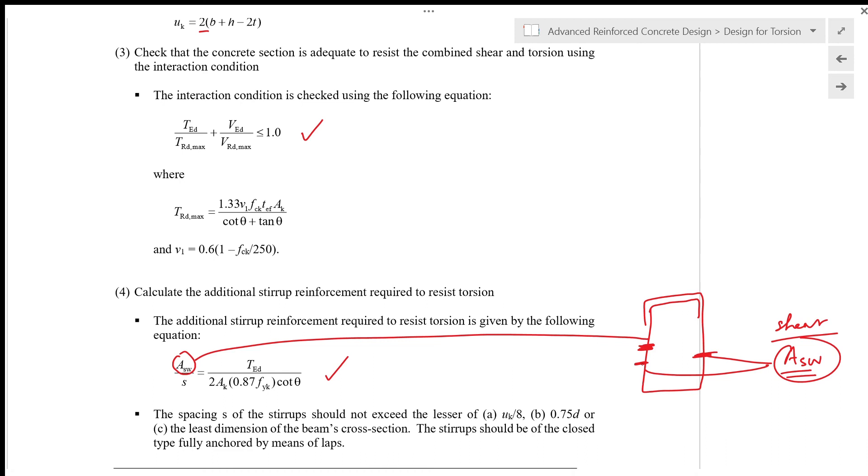After we have done the calculation for the spacing S, the spacing of the stirrup should not exceed the lesser of: A) the perimeter of the shear flow line over 8, and B) 0.75d or the least dimension of the beam's cross section. In this case the dimension B is the least dimension of the beam's cross section.